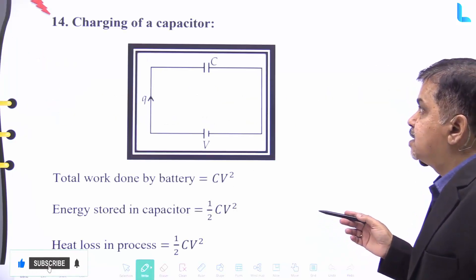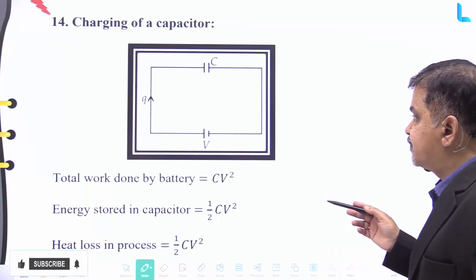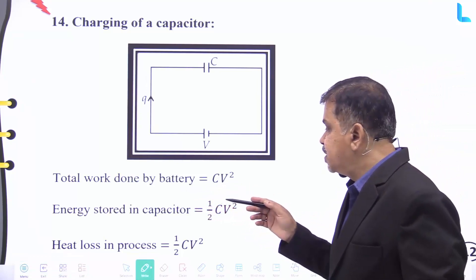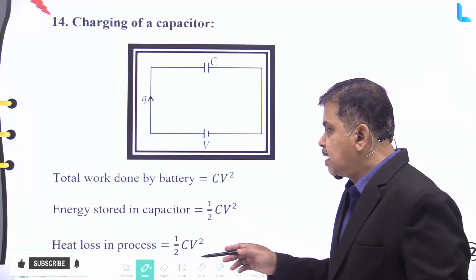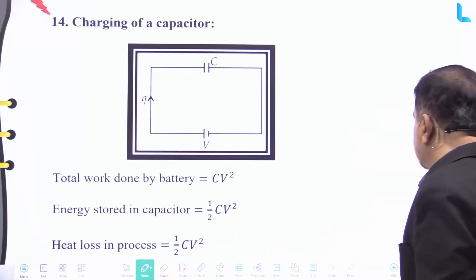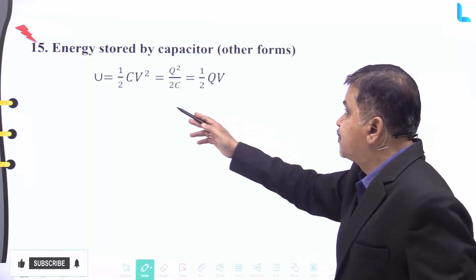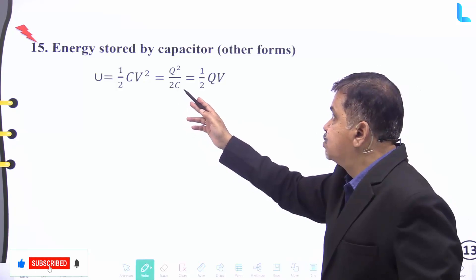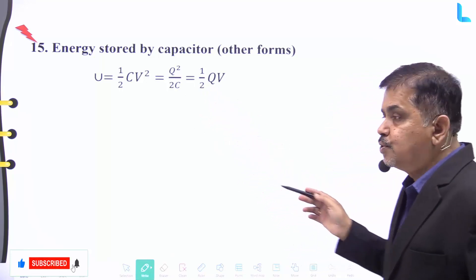Point number fourteen — charging of a capacitor: the total work done by the battery is CV², and the energy stored in the capacitor is (1/2)CV². The heat loss in the process is (1/2)CV². Number fifteen: the energy stored by a capacitor can be expressed as U = (1/2)CV² = Q²/2C = (1/2)QV.